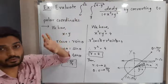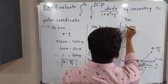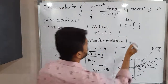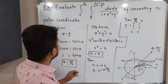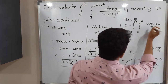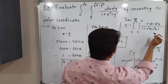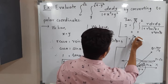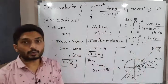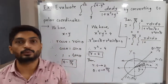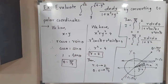Now we put all these values into the integral to convert it to polar form. The integration becomes: outer integral from 0 to π/4 with respect to θ, inner integral from 0 to 2 with respect to r. The function dx dy becomes r dr dθ. In the denominator we have 1 plus r² cos²θ plus r² sin²θ; taking r² common and using cos²θ + sin²θ equals 1, the denominator simplifies to 1 plus r².